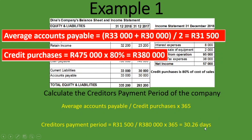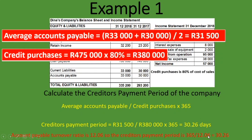This means that on average, it takes 30.26 days — roughly 30 days — to pay back our suppliers. Using the alternative method: 365 divided by the accounts payable turnover ratio of 12.06 gives us the exact same answer of 30.26 days. That is the creditors payment period.